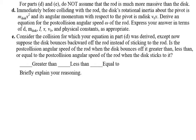For Parts D and E, do not assume the rod is much more massive than the disk. Immediately before colliding with the rod, the disk's rotational inertia about the pivot is given, and its angular momentum with respect to the pivot is M-disk times V-sub-zero times X. Derive an equation for the post-collision angular speed of the rod, expressed in terms of D, M-disk, I, X, V-sub-zero, and physical constants as appropriate.